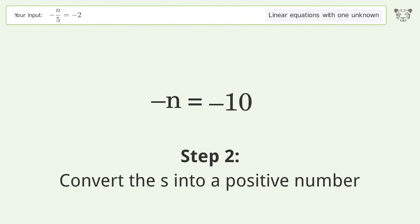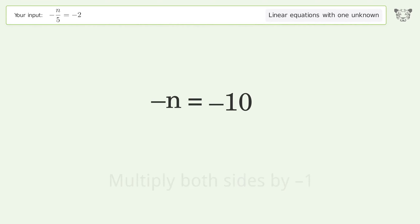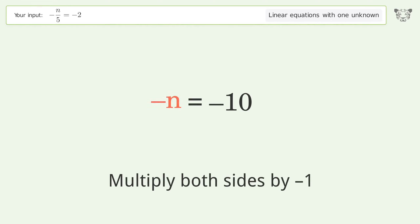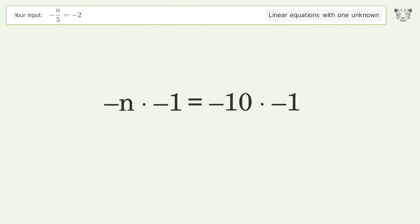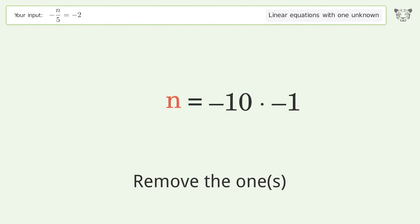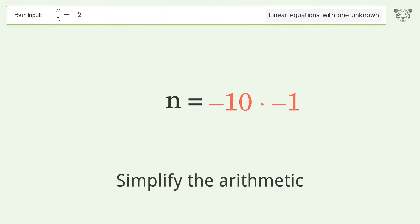Convert the s into a positive number. Multiply both sides by negative 1. Remove the ones. Simplify the arithmetic.